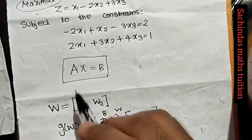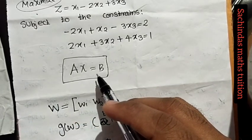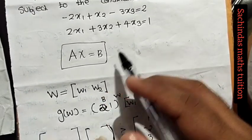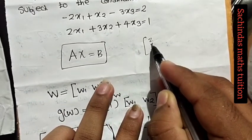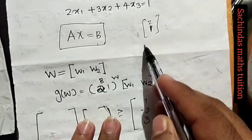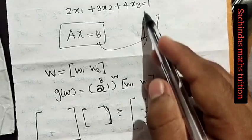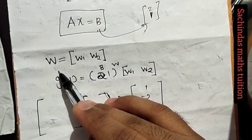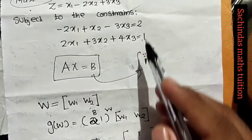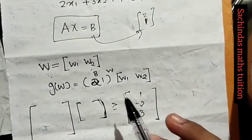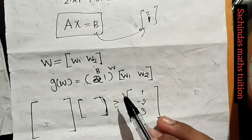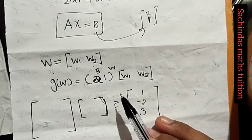What is x equal to b? What is b? b equals 2, 1. So x is equal to b, and 2, 1 is b. b is the vector and x is w1, w2. The variables in the dual are w1 and w2.